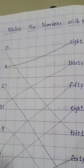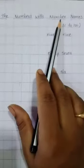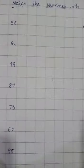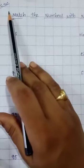Hello children, today's subject is Maths. Take out our Maths notebook, pencil and eraser. In last class we have learned match the numbers with number names 1 to 50. Yes, now we are going to match the numbers with number names for 51 to 100. You have to write first CW and date here.